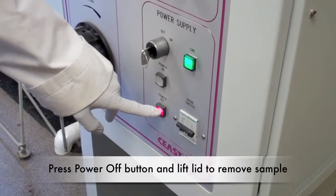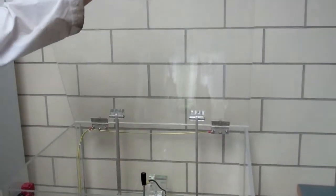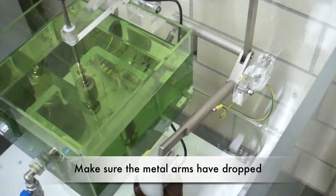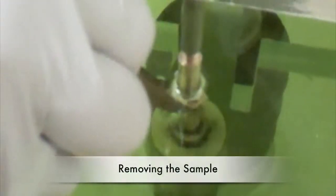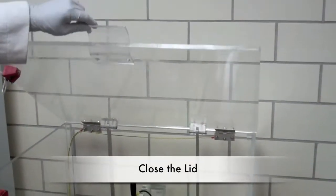To remove the sample, press the red power off button and lift the lid. Make sure the two metal bars are lowered before you reach in for your sample. Secure your sample with tweezers and lift the top probe to remove it. Shake off any excess oil and close the lid.